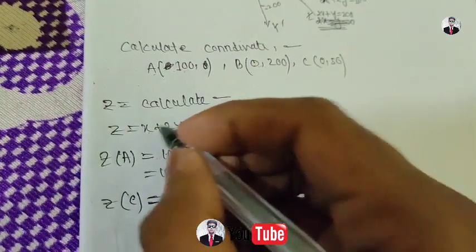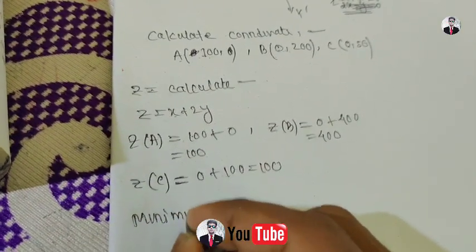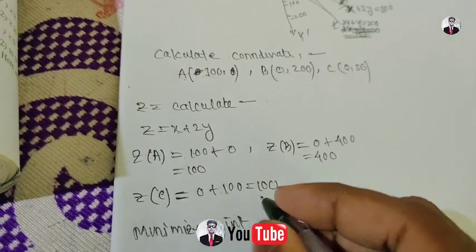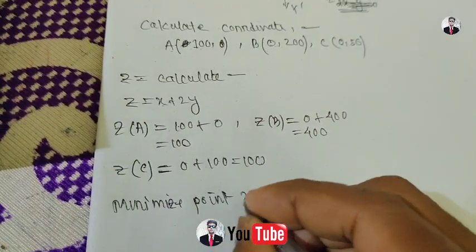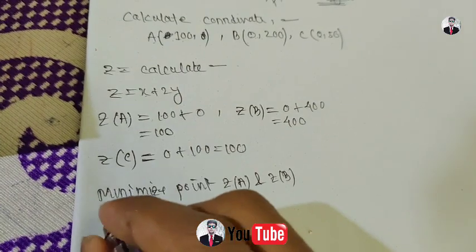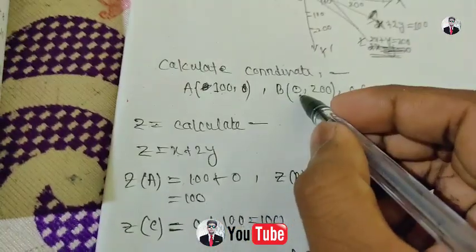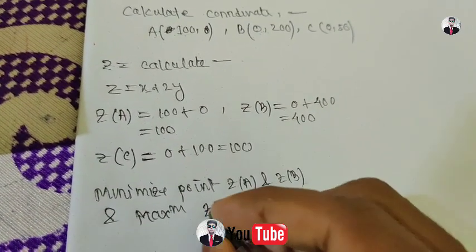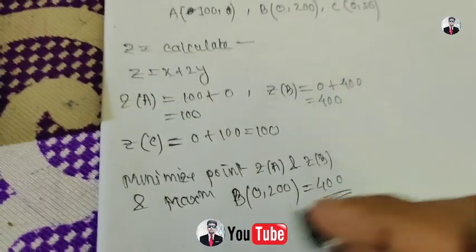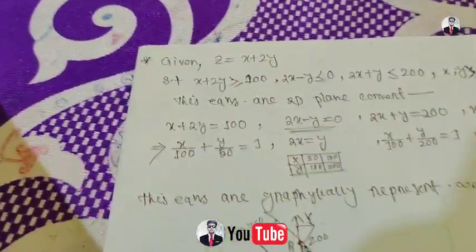For another corner: x equals 100, y equals 50 — so x plus twice y gives 100 plus two into 50, which equals 200. Now for minimize and maximize, I evaluate Z at all corner points. The minimum value of Z is found at one coordinate and maximum at another. According to the values available, the maximize and minimize results are identified from these corner point calculations. Concept is now clear — please comment below.